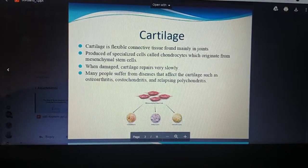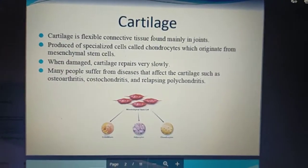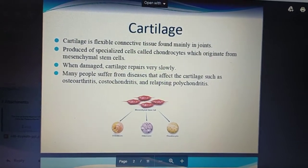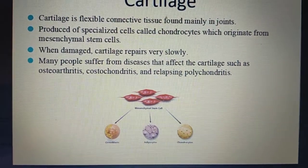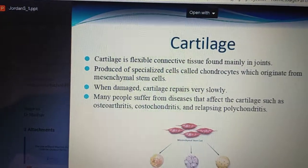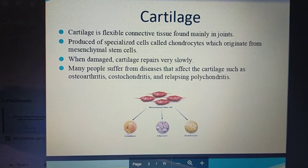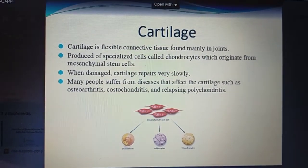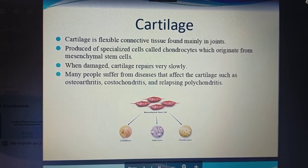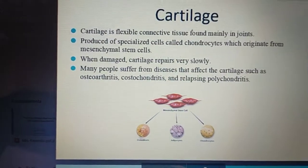Many people suffer from diseases that affect cartilage, such as osteoarthritis and osteochondritis. Here is a figure showing how mesenchymal stem cells can be differentiated into osteoblasts, adipocytes, and chondrocytes. This has been approved in preclinical animal models and in human volunteers, both in vivo and in vitro.